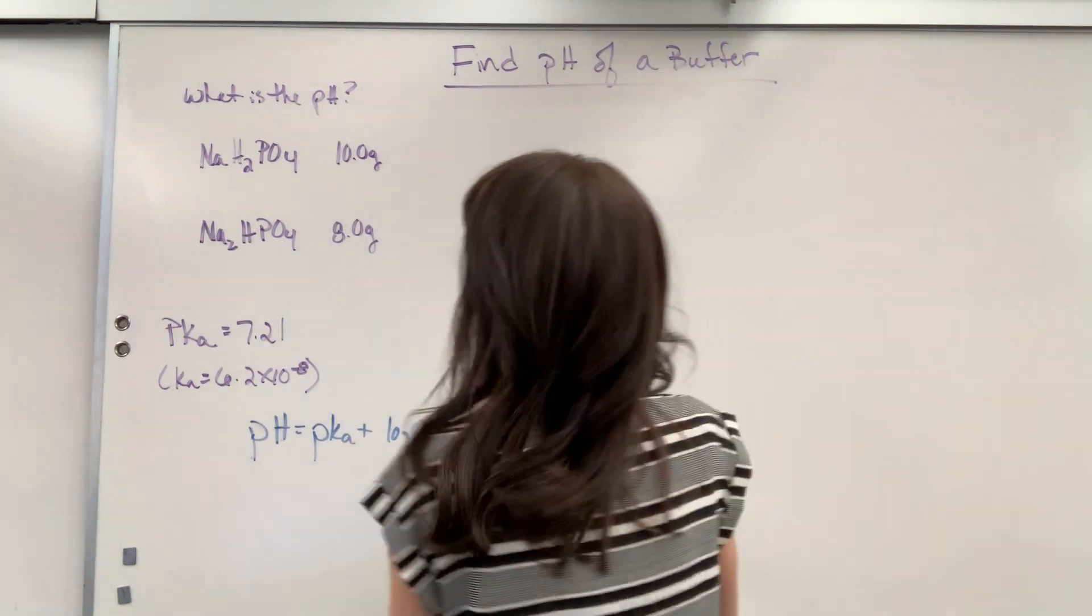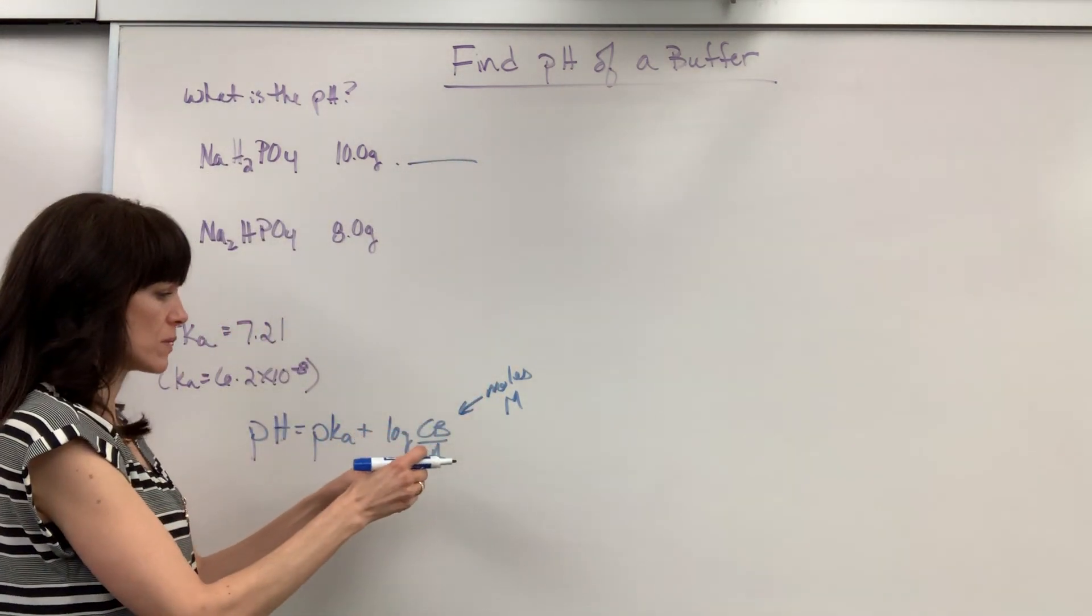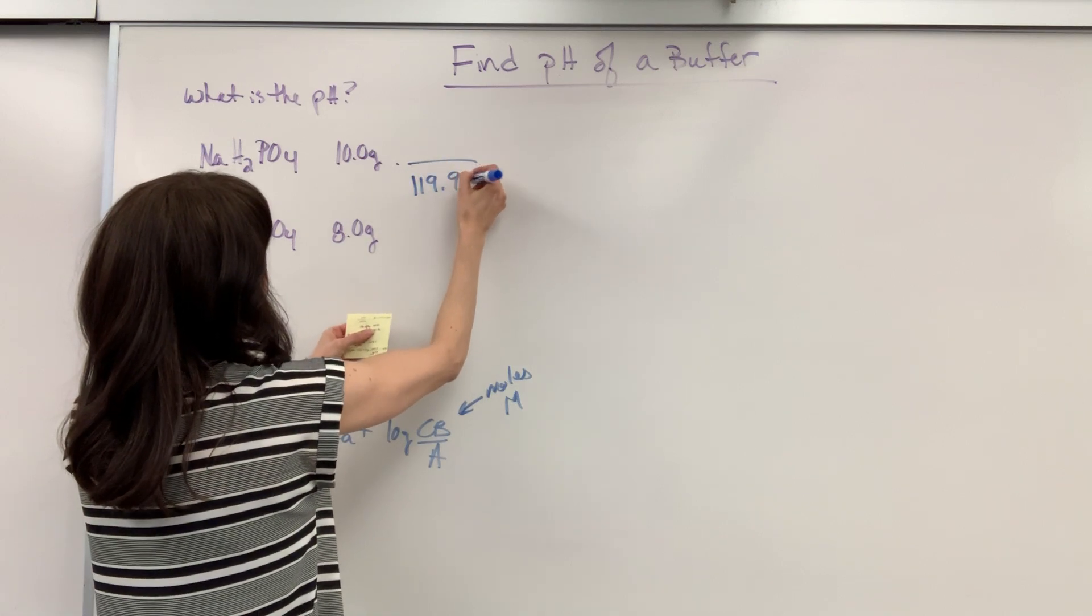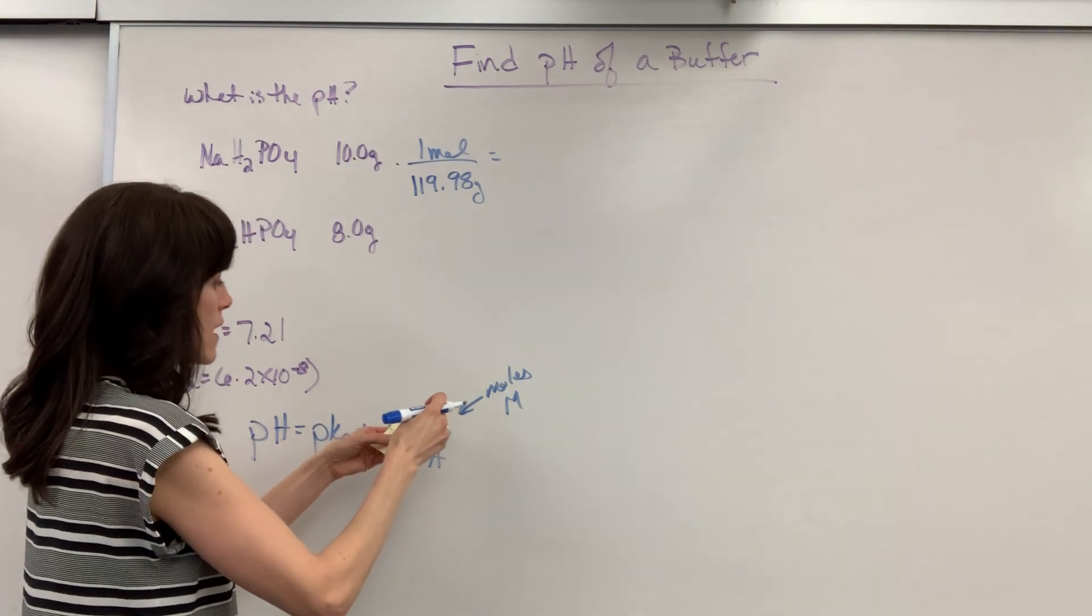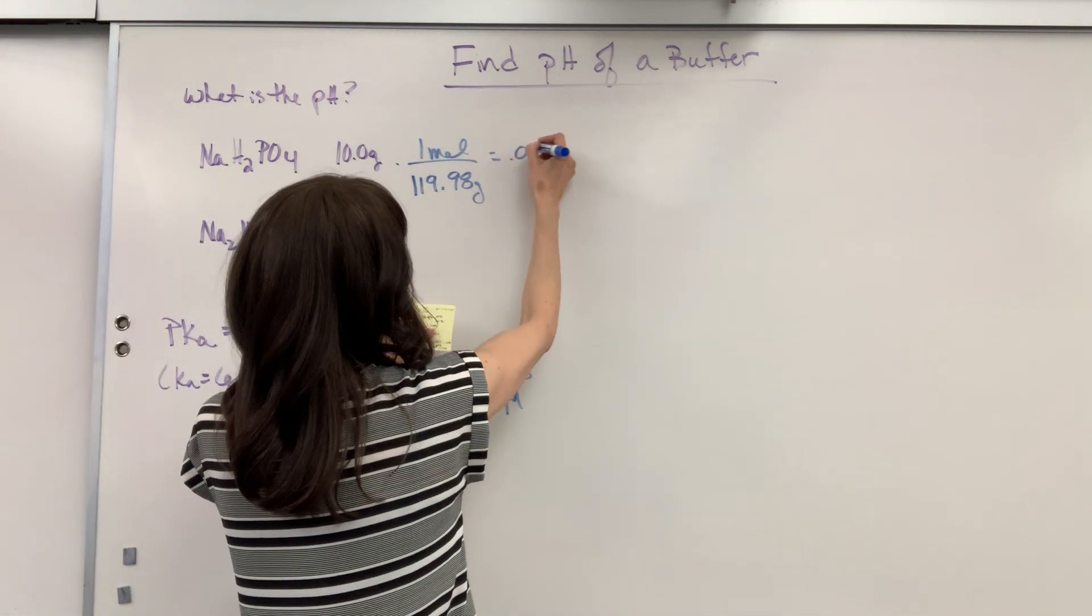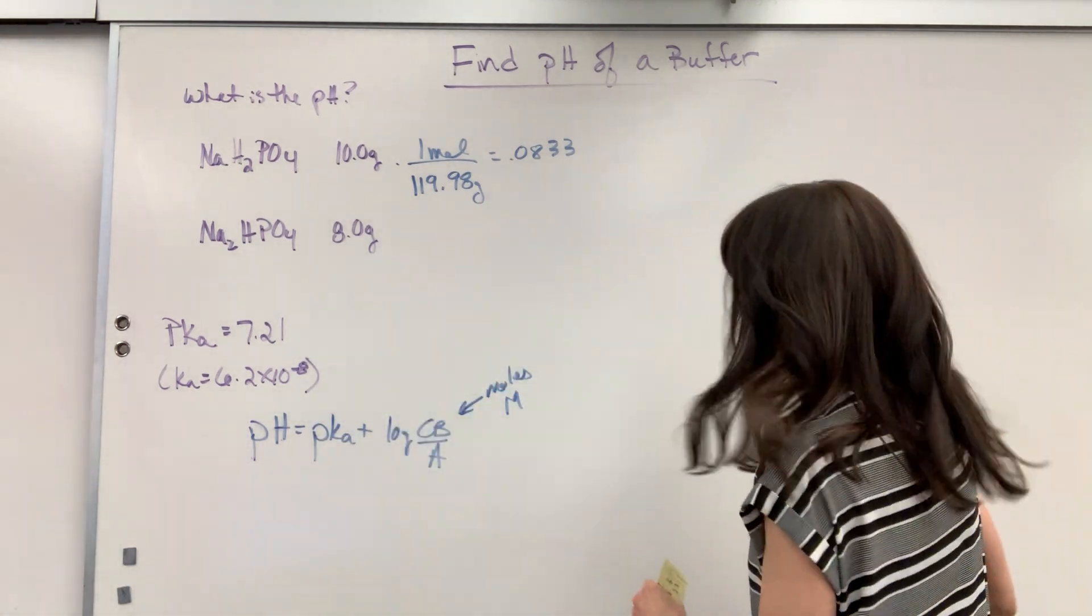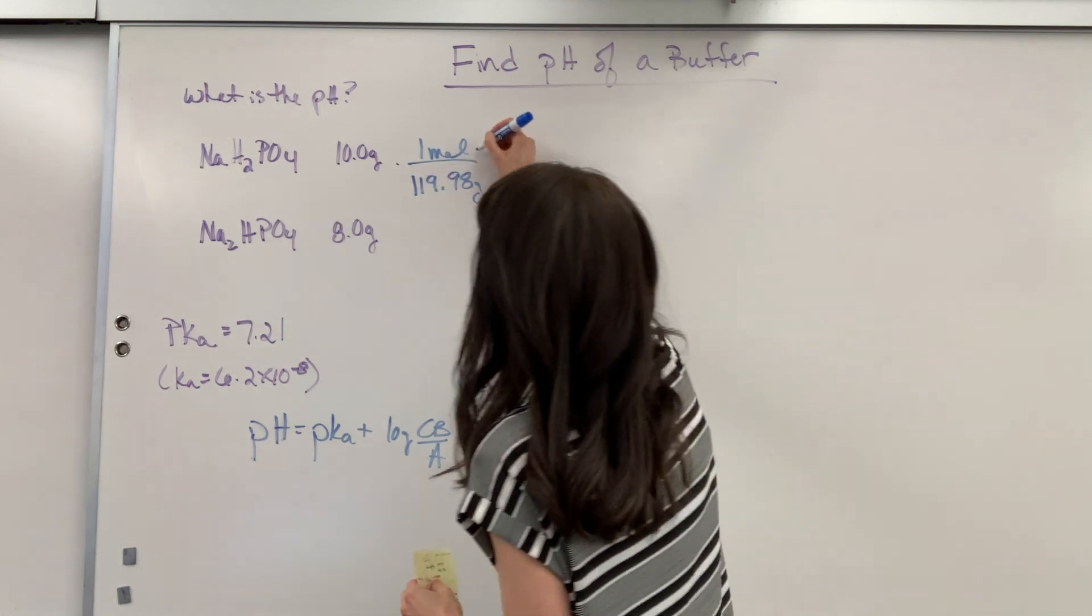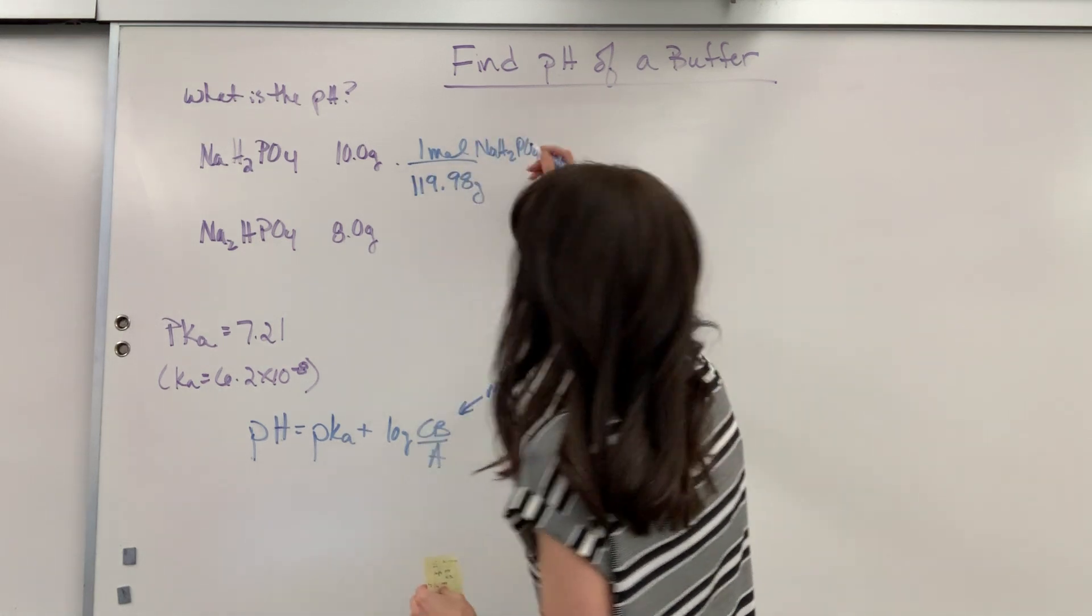All right let's go ahead and convert to moles. So I've already calculated the molar masses. The sodium dihydrogen phosphate, its molar mass is 119.98 grams for every one mole. So if we divide that we are going to get 0.0833. Oh actually I want to show you another step on this and this also will trip up students.